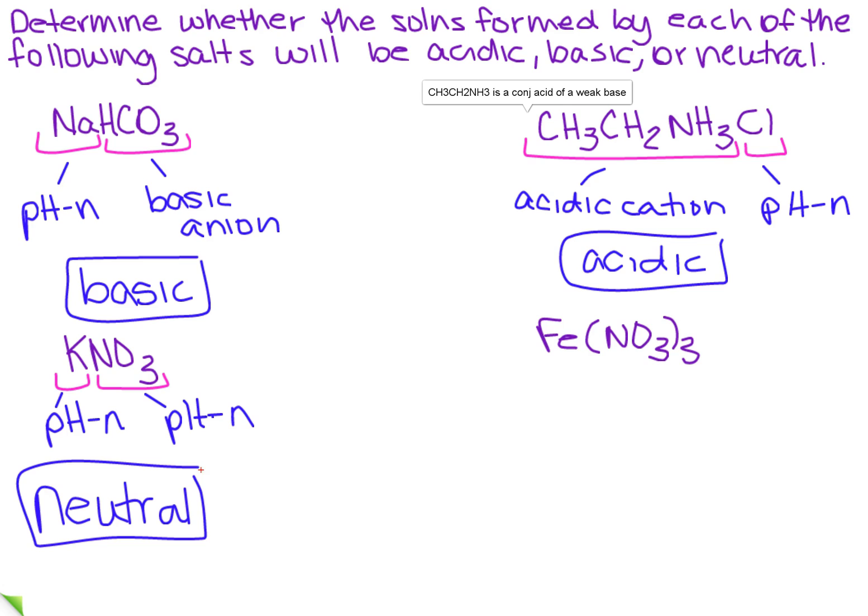And what about the last one? Well, I've got the Fe, and I've got the NO3. So we know the Fe, when attached to an OH, is what? It is a weak base, so this is an acidic cation.